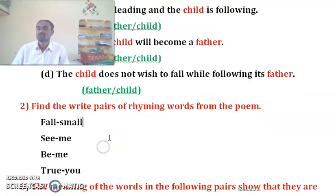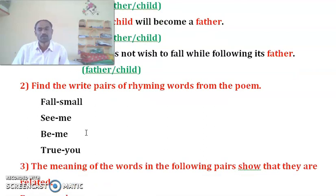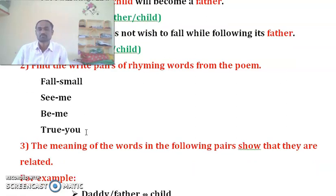Question number 2 is one of the easiest questions: Find the right pairs of rhyming words from the poem. There are four pairs of rhyming words in the poem: fall/small, see/me, be/me, to/you.